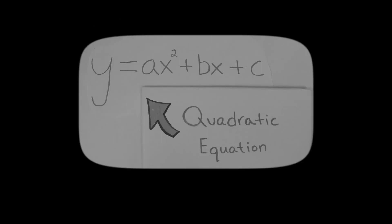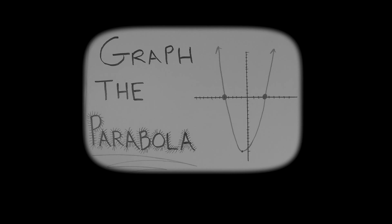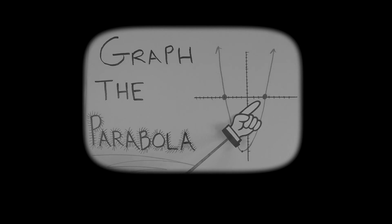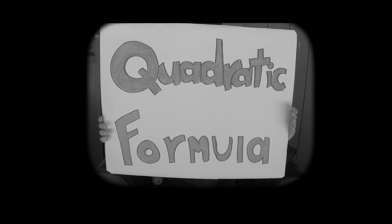y equals ax squared plus bx plus c. A quadratic equation staring at me. What can be done to lead us to the answer? Well, you can factor or complete the square or grab the parabola if you dare to find out where it crosses the x-axis. But there's an age-old trick that will prevail. A method that will never fail. The one and only quadratic formula.